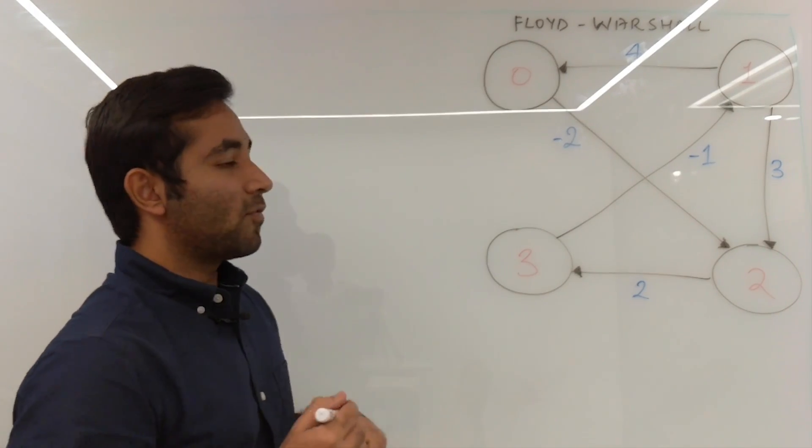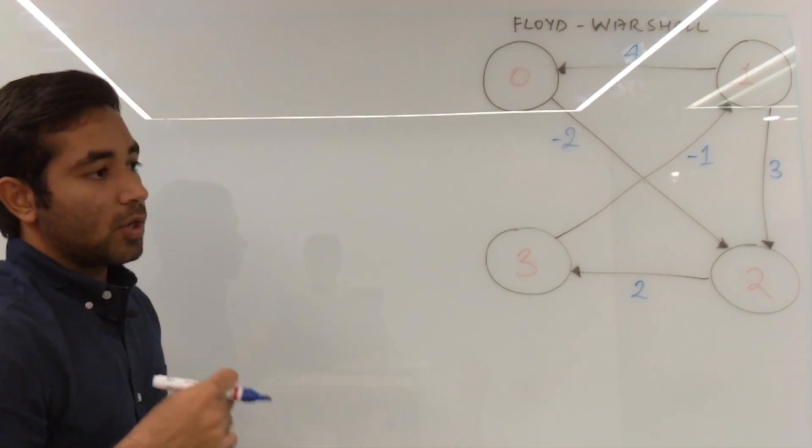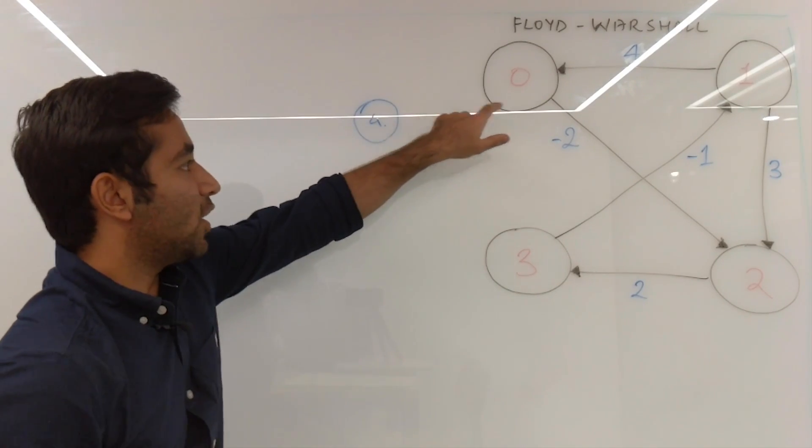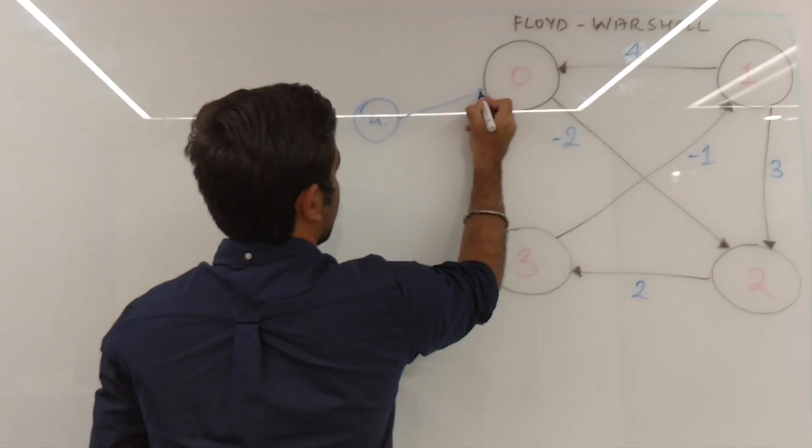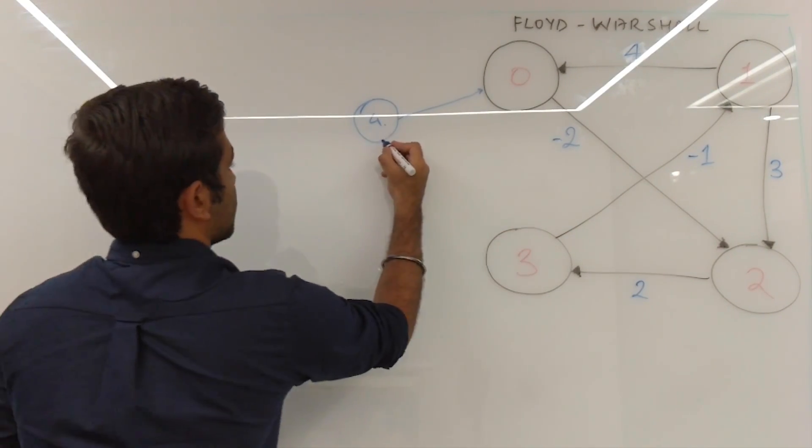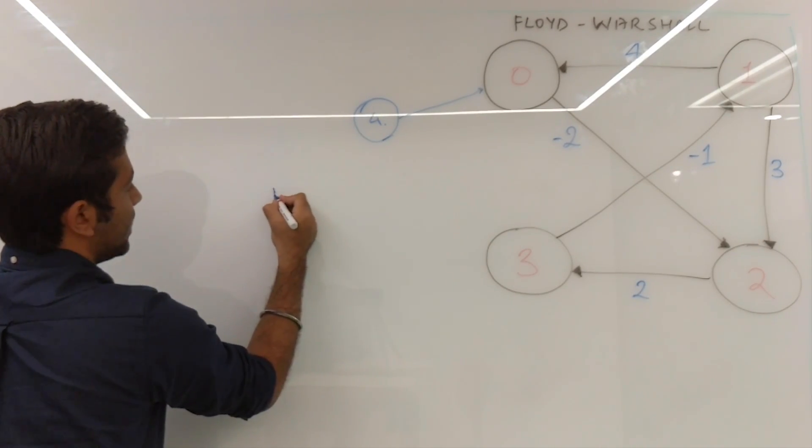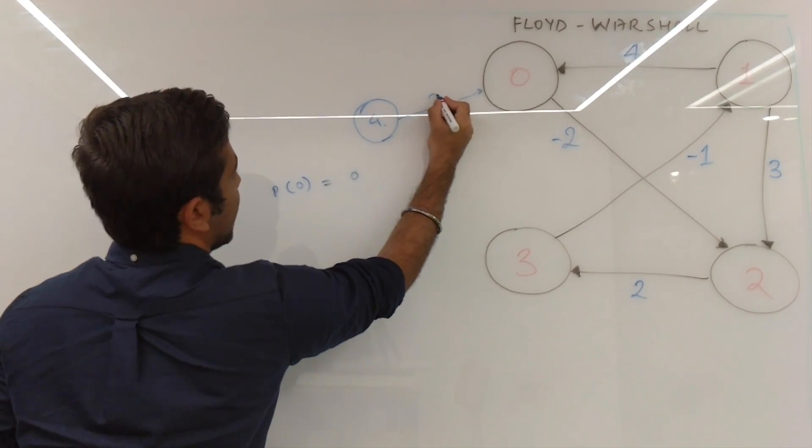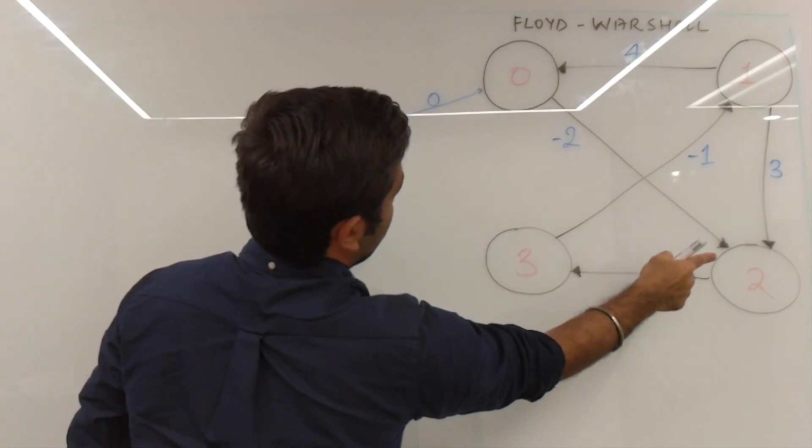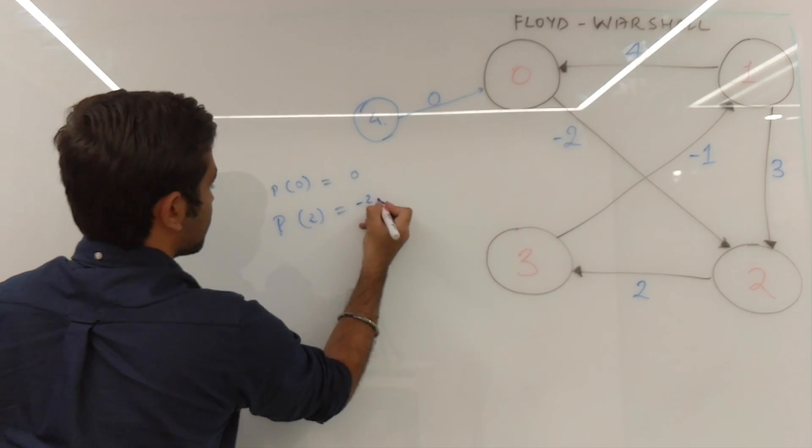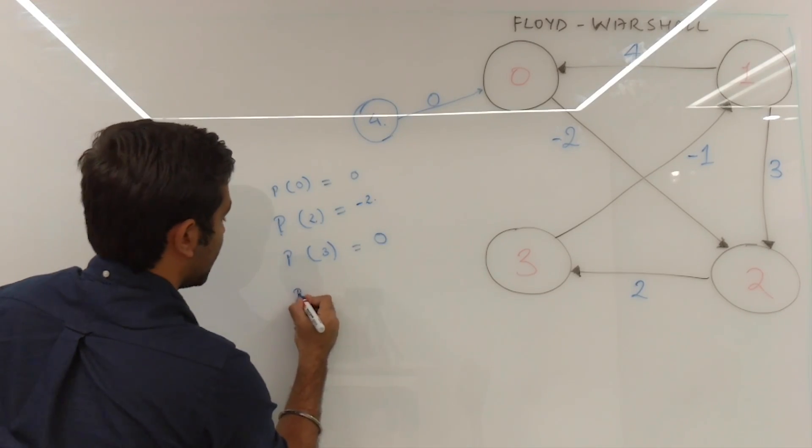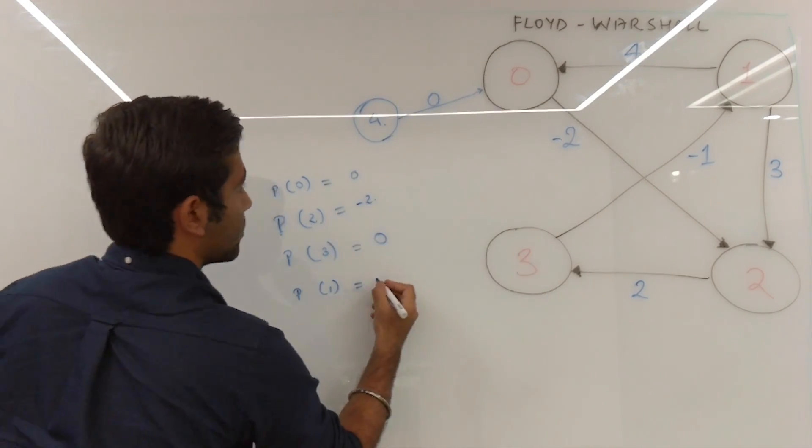I'll give you an example of how Bellman-Ford algorithm works. So we'll take an external node, let's say it's 4, and connect it with any of the nodes. Now we'll try to find the shortest path from this node to every other node using Bellman-Ford algorithm. So path length for node 0 will be 0 as this edge weight is 0, path length for 2 as there's only one way in which you can reach 2 will be minus 2, path length for 3 will be 2 minus 2 which is 0, and path length for 1 will be minus 1.